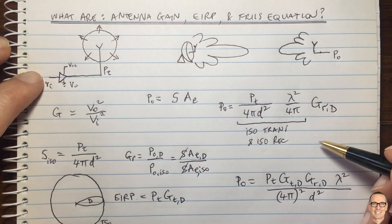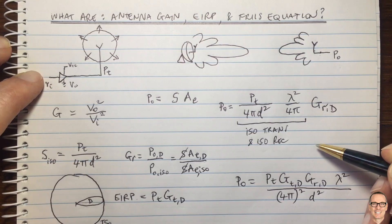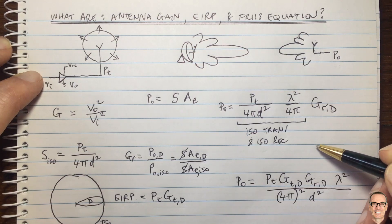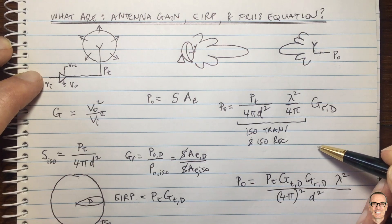Hopefully this has given intuition into antenna gain, EIRP, and the Friis equation for wireless communications. If you like the video, give it a thumbs up. Check out the description below for a fully categorized listing of all videos on the channel, and subscribe for more videos.